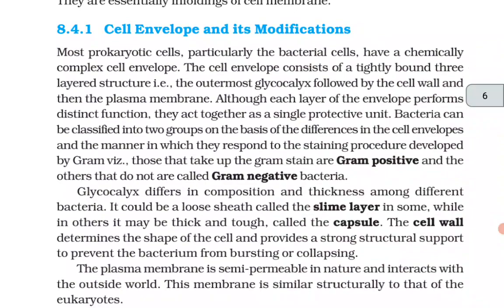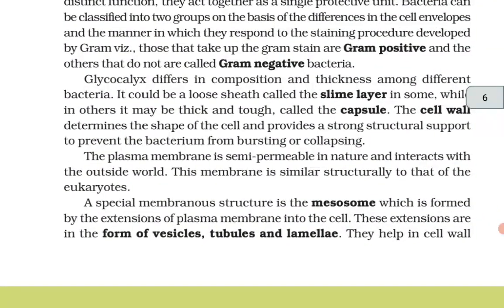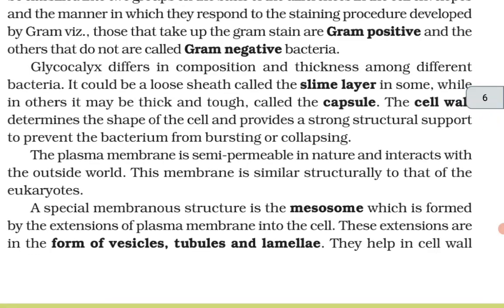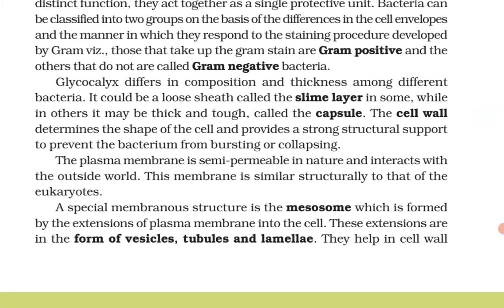Glycocalyx differs in composition and thickness among different bacteria. It could be a loose sheath called the slime layer in some, while in others it may be thick and tough, called a capsule. The cell wall determines the shape of the cell and provides strong structural support to prevent the bacterium from bursting or collapsing. The plasma membrane is semi-permeable in nature and interacts with the outside world. This membrane is structurally similar to that of eukaryotes.